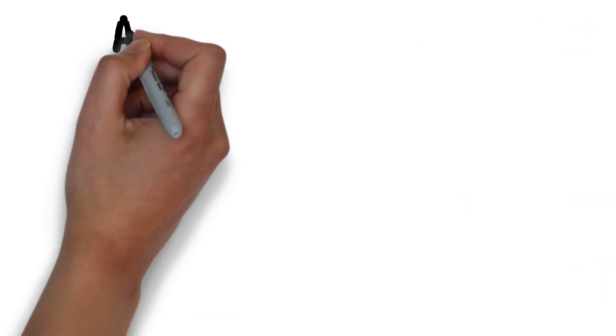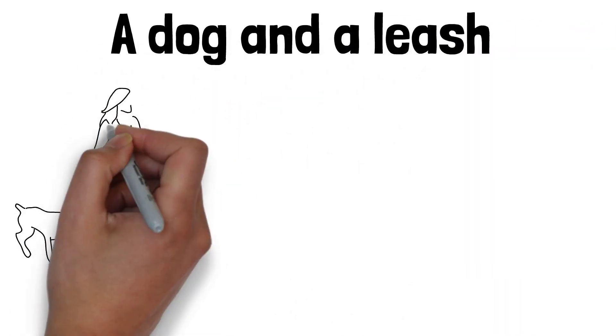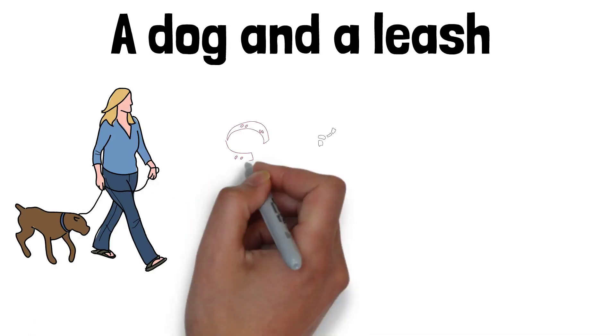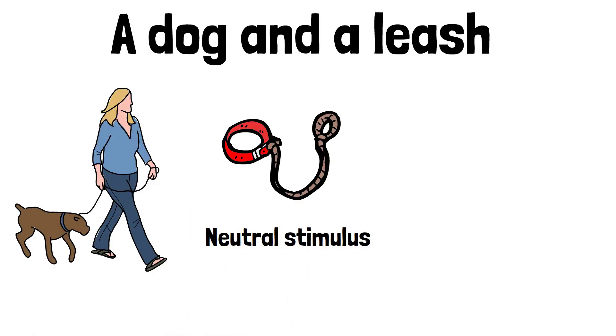Finally, consider a dog and a leash. If a dog owner only takes the dog for a walk when putting on its leash, the leash initially is a neutral stimulus with no special meaning. However,